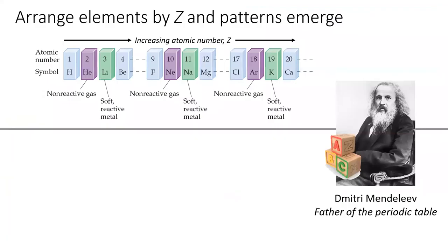Long before we knew all the elements, Russian chemist Dmitry Mendeleev had the idea to arrange the elements in order of increasing mass. He noticed that certain patterns emerge when you do.